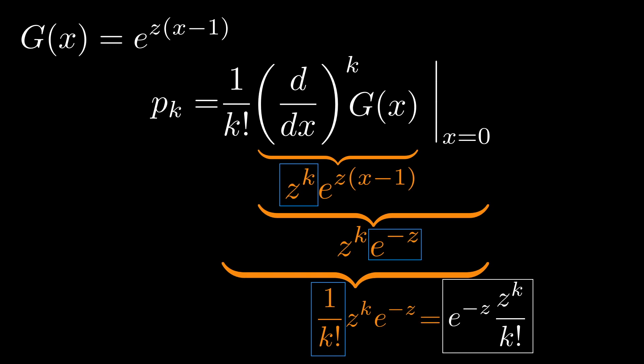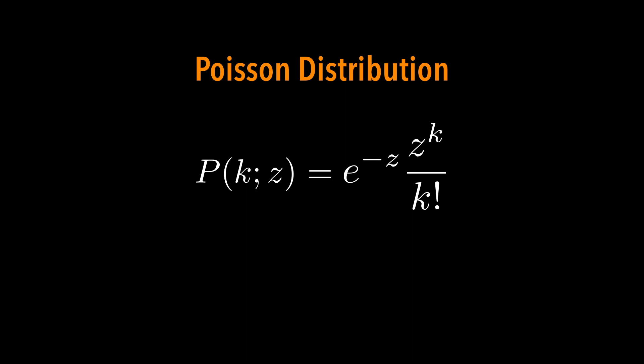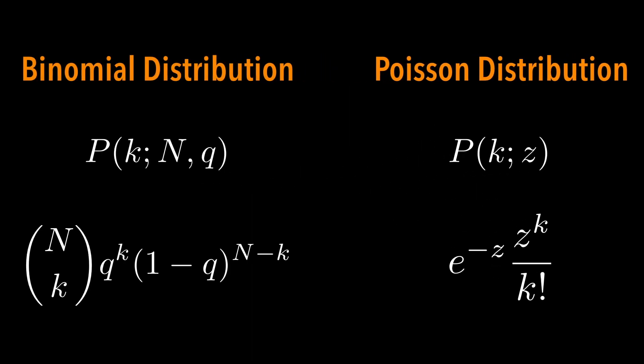Does this look familiar? And yes, this is exactly the formula of the Poisson distribution. So in other words, we have just shown that the Poisson distribution is just an asymptotic limit of a binomial distribution when we have many trials with a small chance of success.